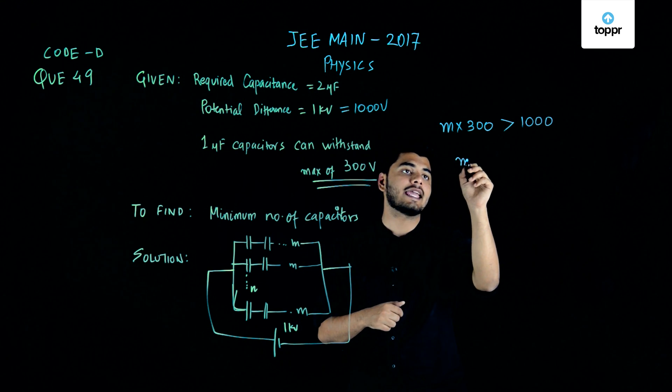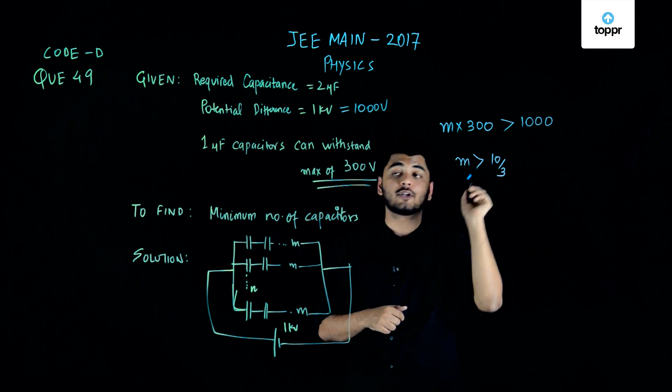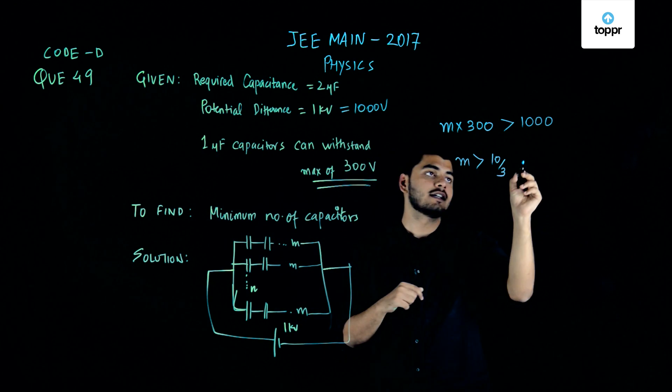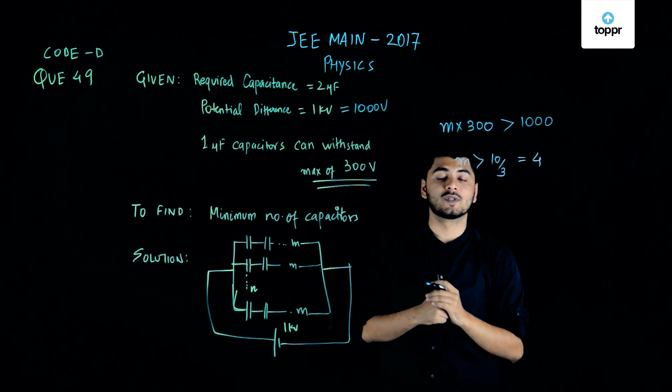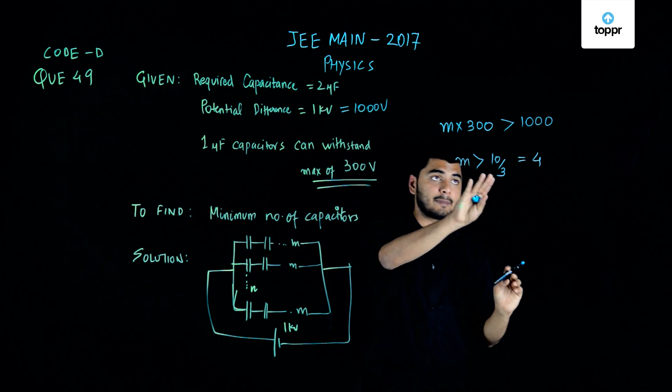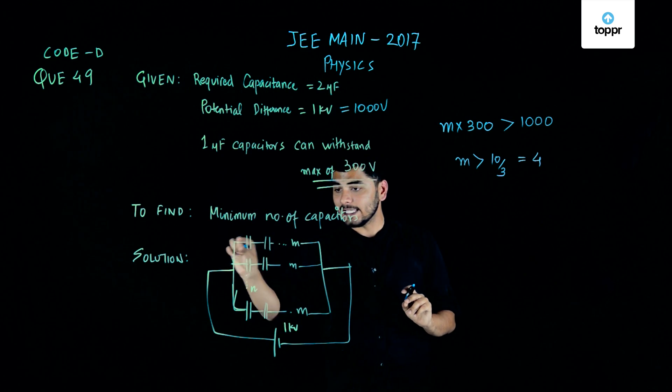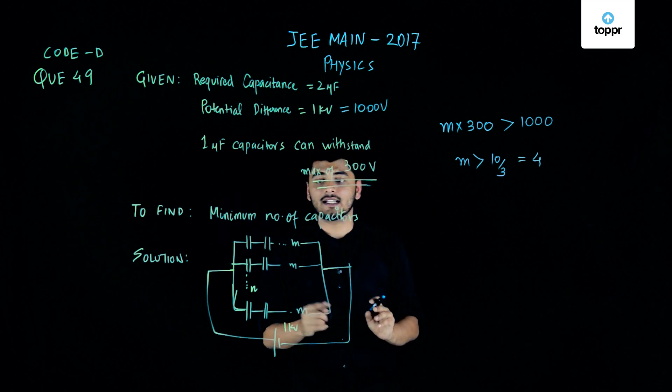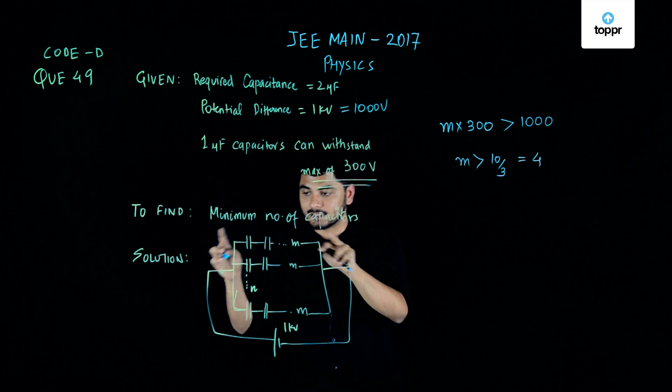This implies my m must be greater than 10 by 3, and since I have to use my minimum number of capacitors, this m must attain a value which is equals to 4. So I must have 4 capacitors of 1 microfarad in each of these rows in order to withstand 1000 volts across this circuit.